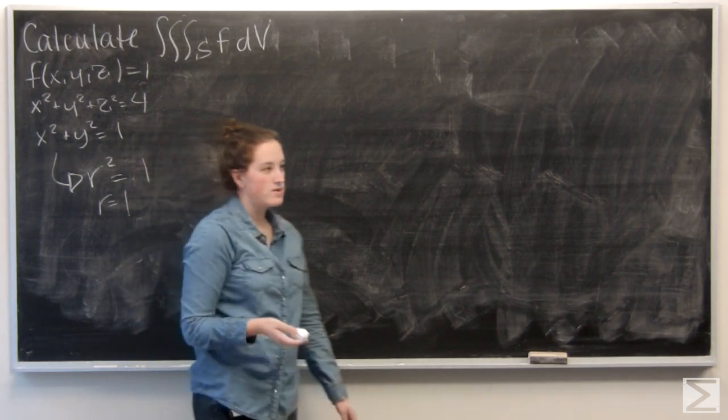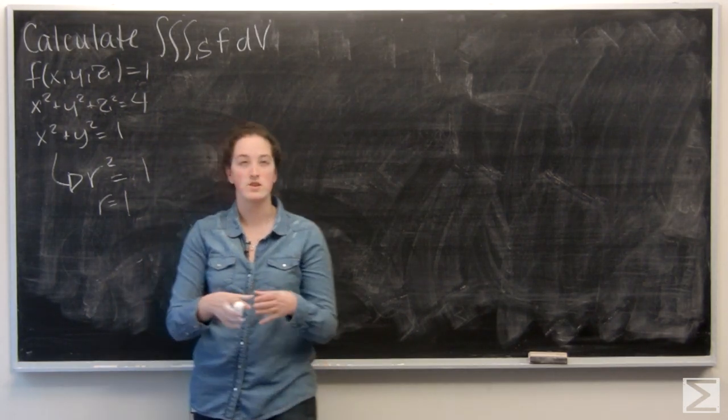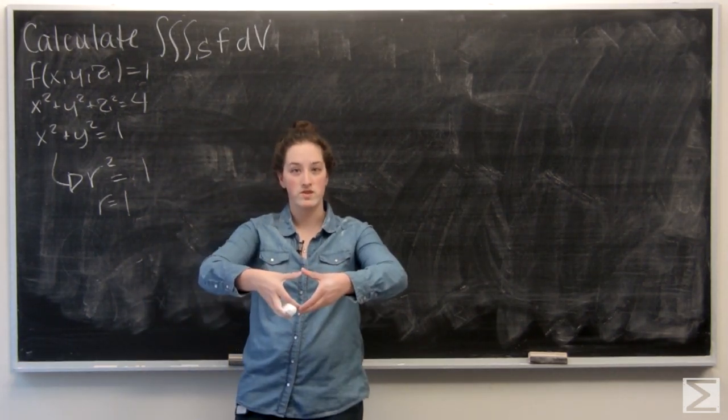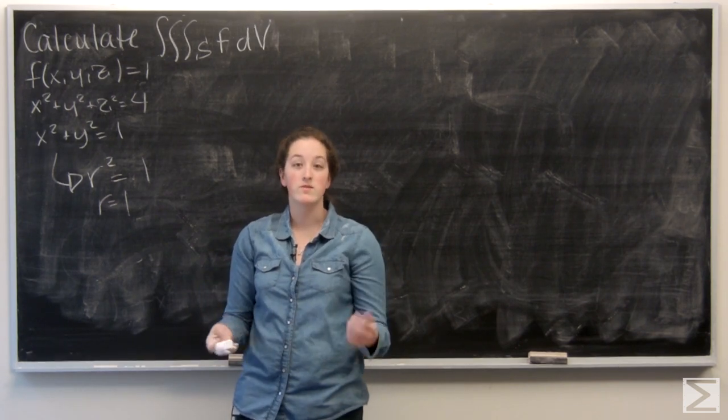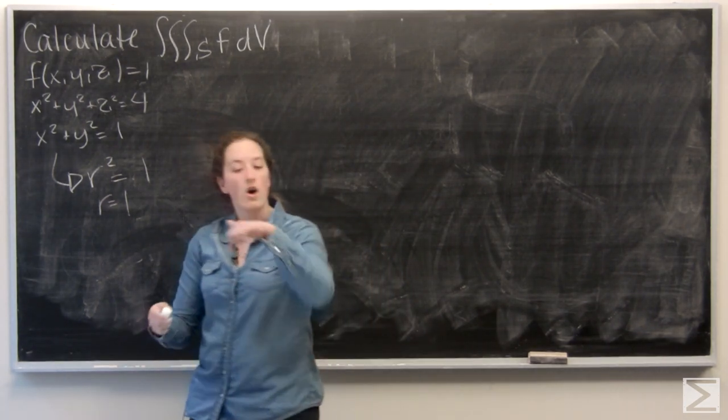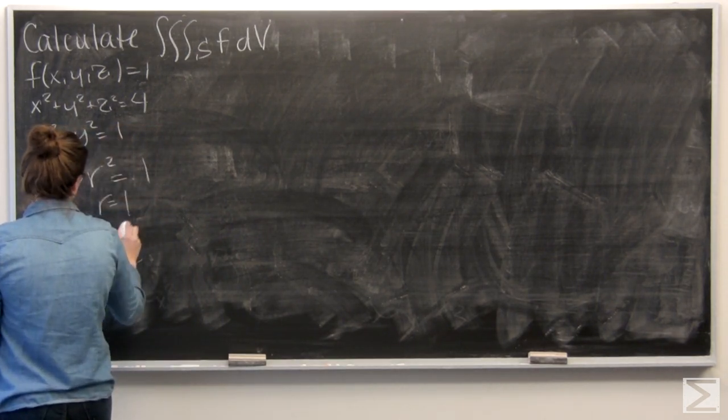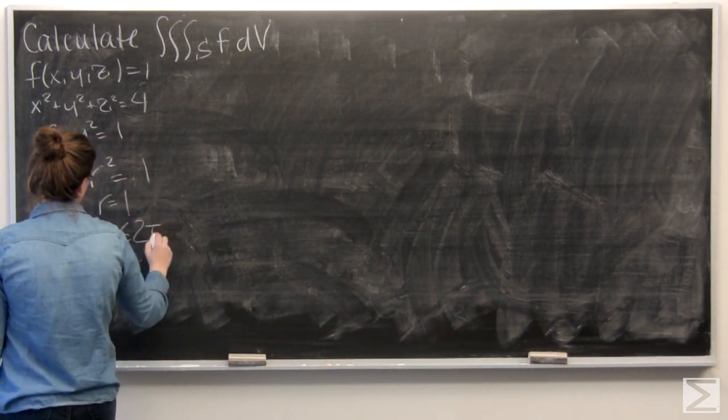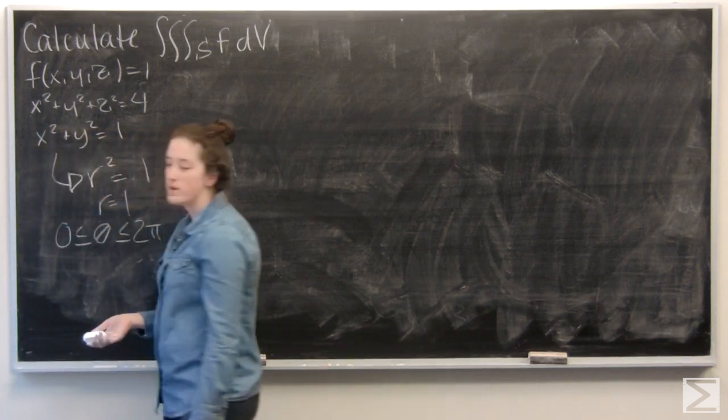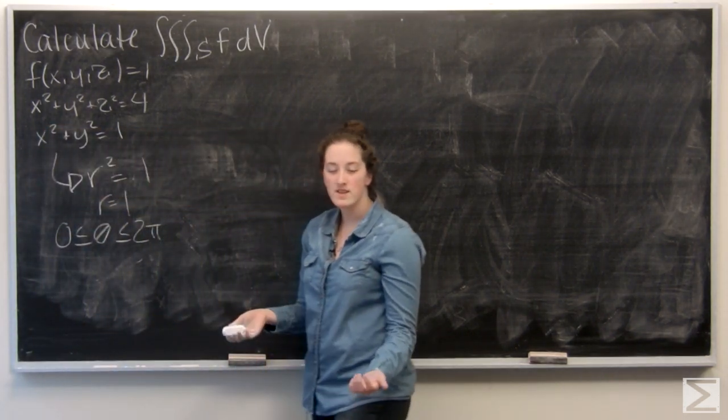And then x squared plus y squared equals 1 is a cylinder, but it's a full circular cylinder. So theta is going to be from 0 to 2 pi, just because it goes all the way around. So I have two of my three bounds, and the last one I need is z.